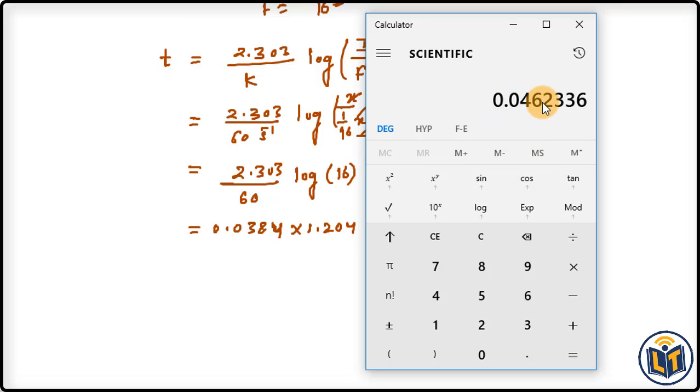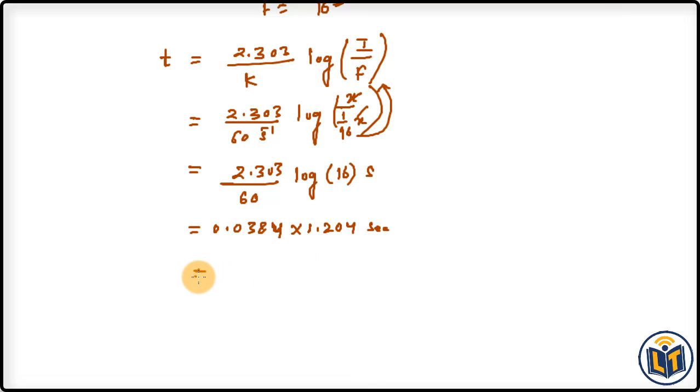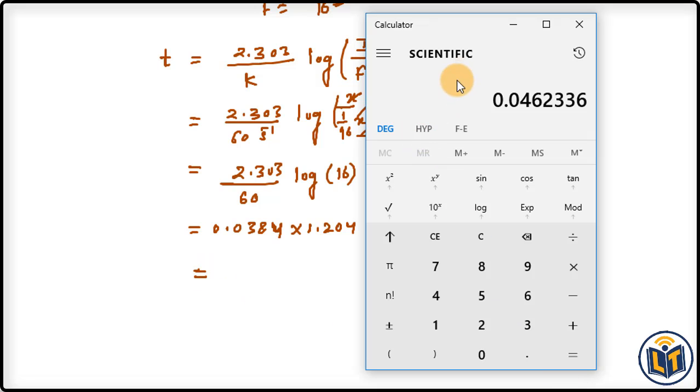We can write this value in scientific notation. The value is 4.62 multiplied by 10 to the power minus 2, or 4.62 × 10^-2.